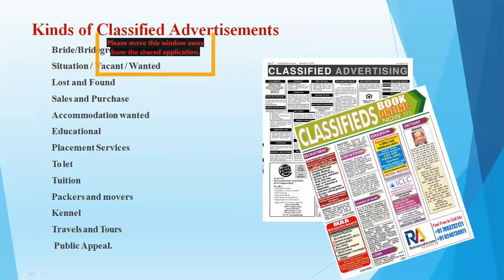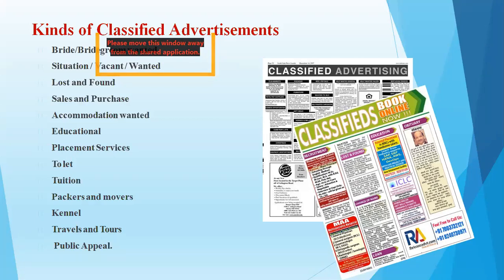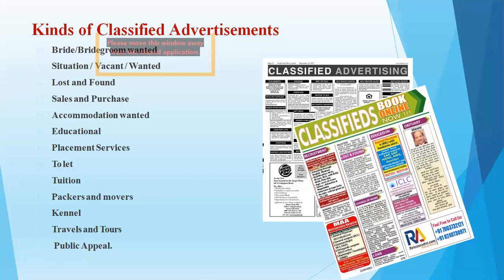The kinds of classified advertisements include: bride/bridegroom wanted (matrimonial), situation vacant, situation wanted, lost and found, sales and purchase, accommodation wanted, educational, placement services, to let, tuition, packers and movers, kennel, travels and tours, and public appeal. Is there any heading that is not clear?